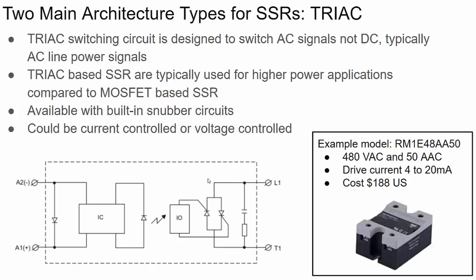The second type of architecture uses a TRIAC. As covered in part 2, TRIACs switch AC and typically can't switch DC, so a TRIAC-based solid state relay can only handle AC signals. Forcing current through A2 to A1 actuates a drive IC that creates an optical signal to control the TRIAC's drive circuit. The optocoupler isolates the DC low power control circuit from the high powered AC signal. A TRIAC is two parallel SCRs connected in opposite directions to allow current in either direction, and the drive circuit handles biasing based on the polarity at L1.